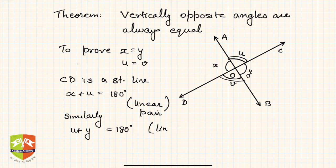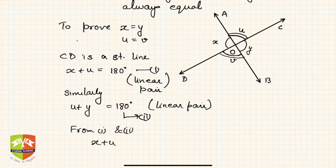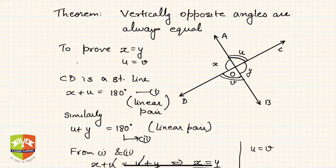Similarly, u plus y is also 180 degrees, for the same reason — linear pair, because AB is a straight line. From equations one and two, since both equal 180 degrees, x plus u equals u plus y. Cancelling u from both sides gives x equals y. With similar logic, u also equals v.